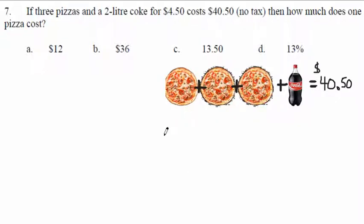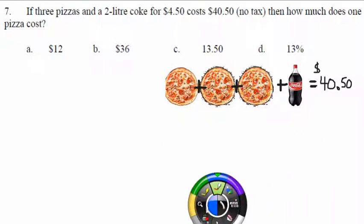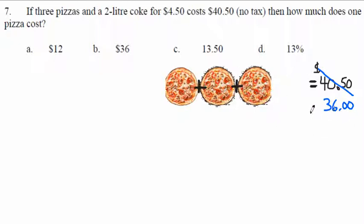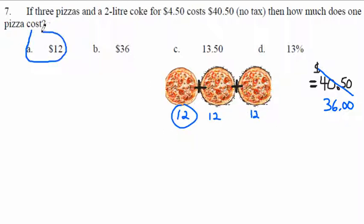You could also reverse engineer it — solve it backwards, undo what was done. Three pizzas and a Coke cost $40.50. Take away the Coke: $40.50 minus $4.50 is $36. Now three times what equals 36? A 12 plus a 12 plus a 12 is 36, so the answer is $12. You just solved it backwards by undoing each step.